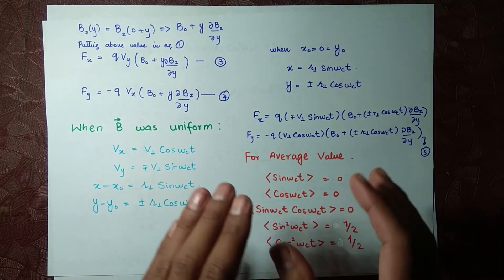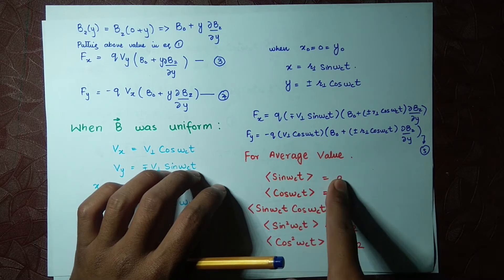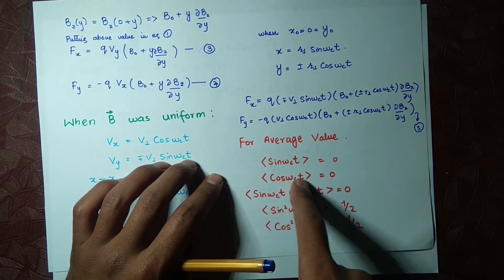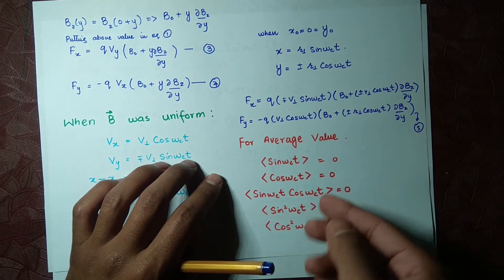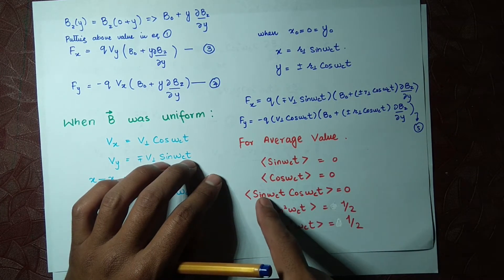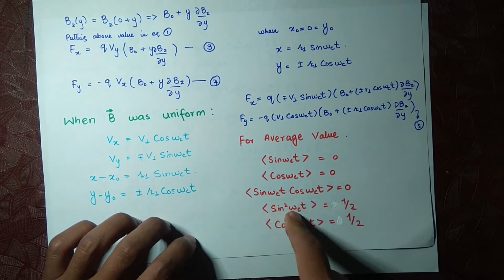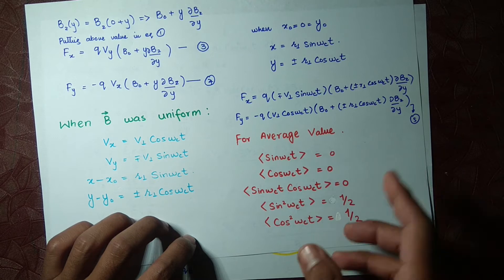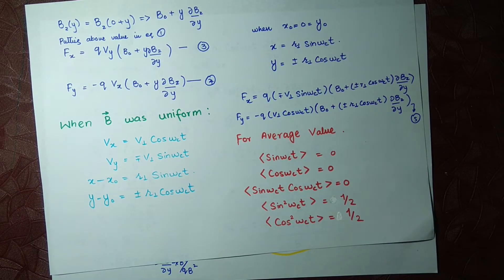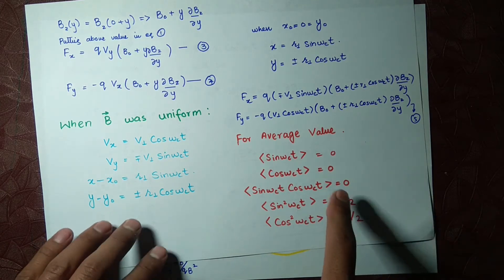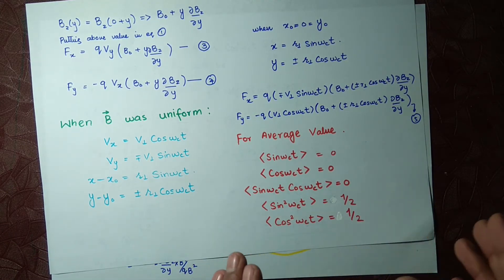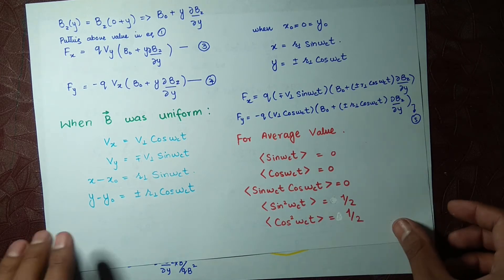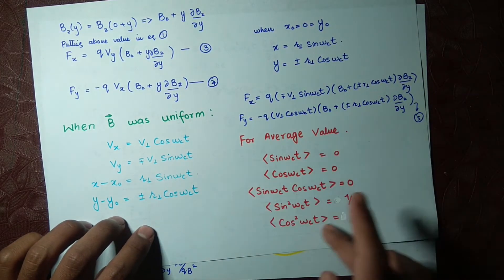For the average values, we know that the average of sin θ equals zero, and the average of cos θ equals zero, where θ = ω_c t. In general, the average of sin θ cos θ also equals zero. However, the average of sin² θ equals one-half, and the average of cos² θ also equals one-half. We don't need to prove these here — we just need to recall and remember these values.